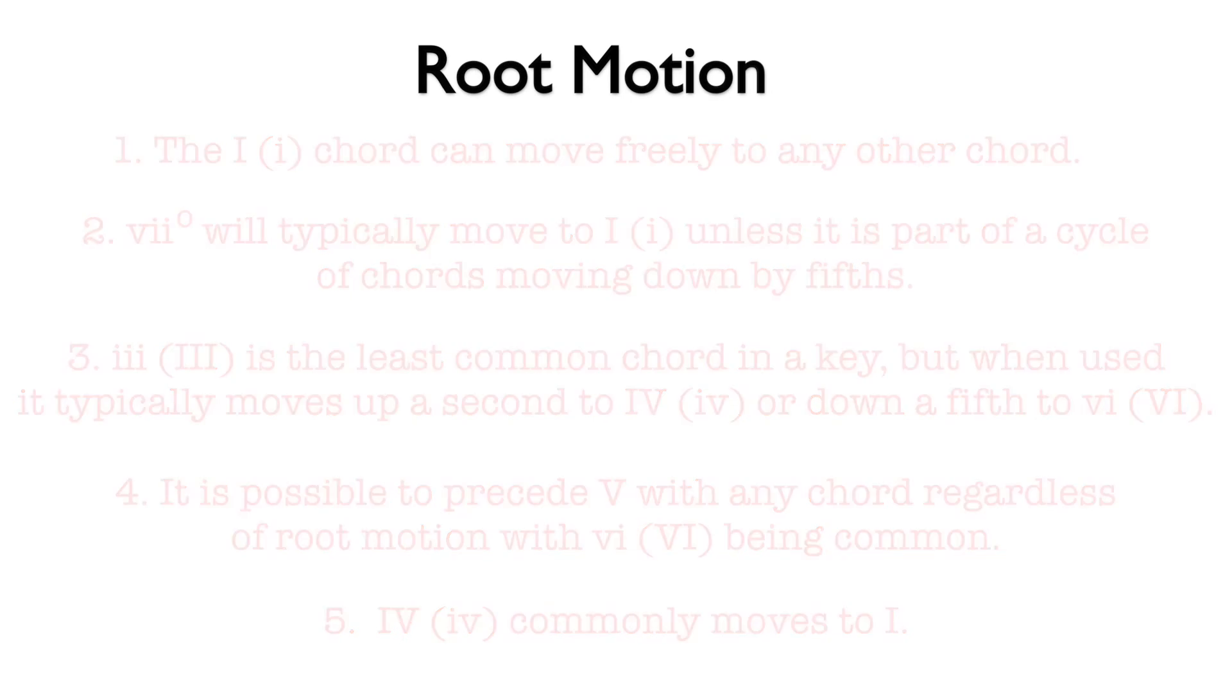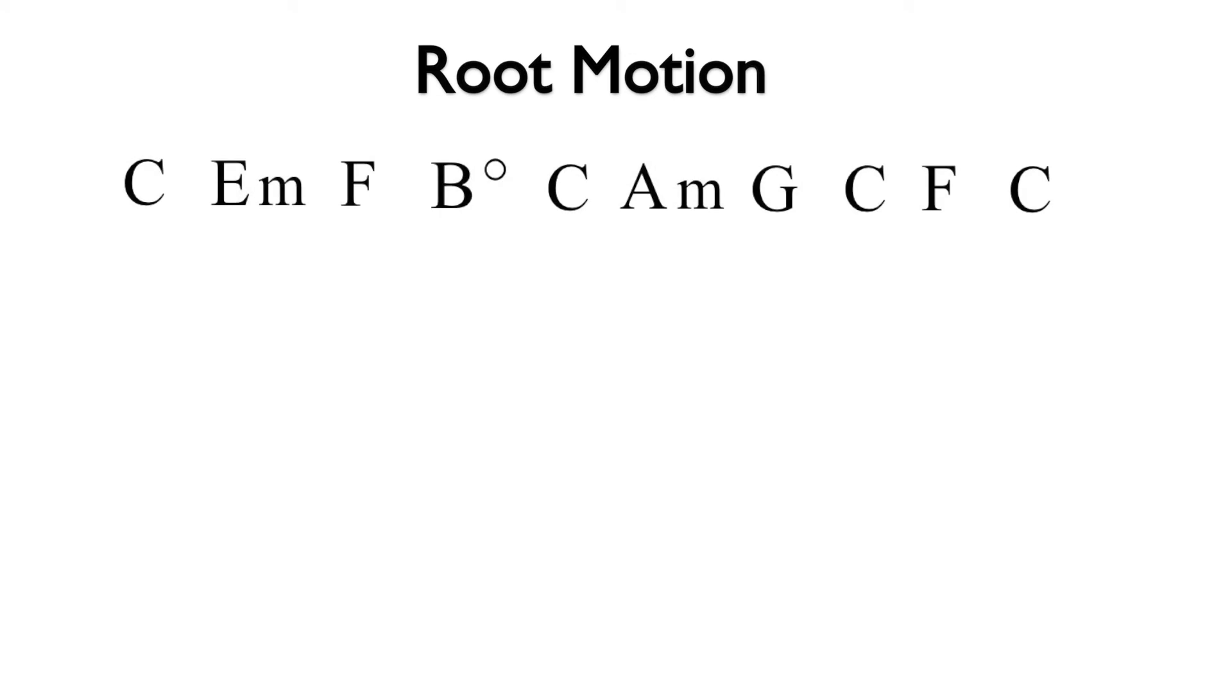Let's look at the following chord progression in C major: I, iii, IV, vii diminished, I, vi, V, I, IV, I.